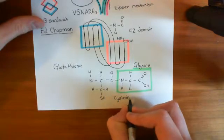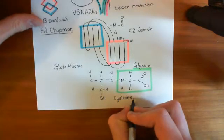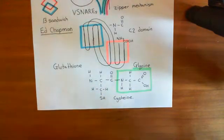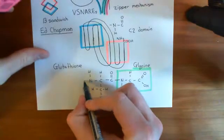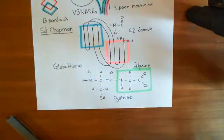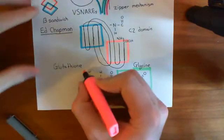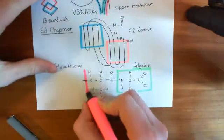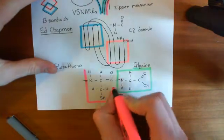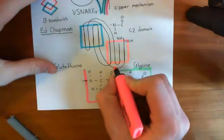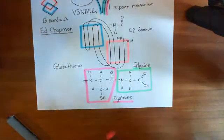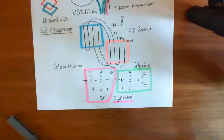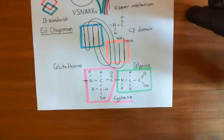This is cysteine. Let me highlight that one up as well, and draw the bond that's going to come off here. This is our cysteine amino acid residue in glutathione. So far, very simple — we've just had glycine with cysteine.